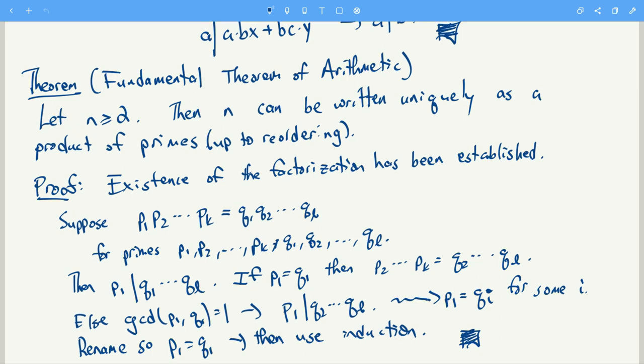It just says that if you have an integer greater than or equal to 2, you can write it uniquely as a product of primes. The uniquely means you can rearrange all the primes, their order, but that's the only way to change the factorization.